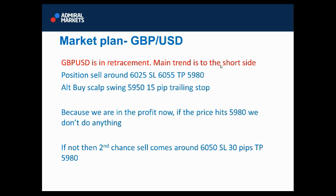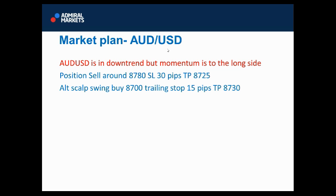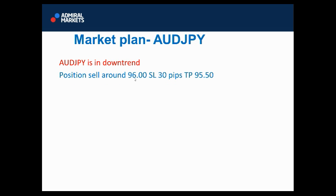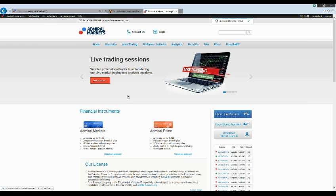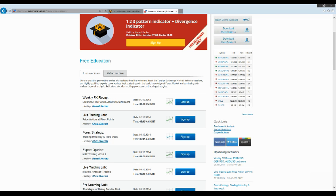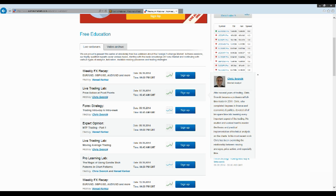EURUSD and GBP/USD setups remain active — we might get another sell at 60.50. Market plan for Aussie: sell 87.80, target 87.00. USD/JPY: 96.00, target 95.50. USD/CHF: if we get another chance. Under education and webinars, you can see the Weekly Forex Recap and the Live Trading Lab with Chris — those are the Admiral Markets webinar offerings.